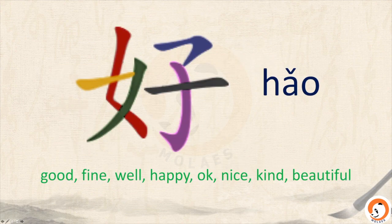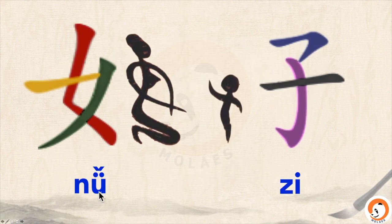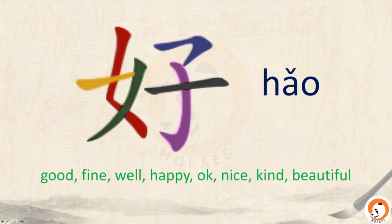And also, we learned this character 好. The idea is a woman, 女, and a child, 子. Together is 好.